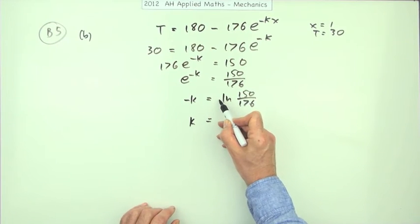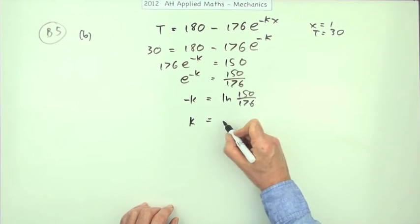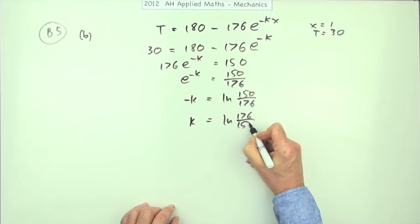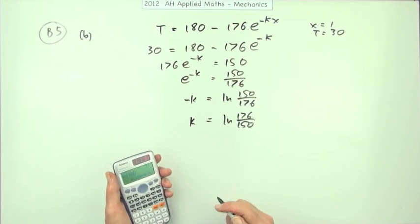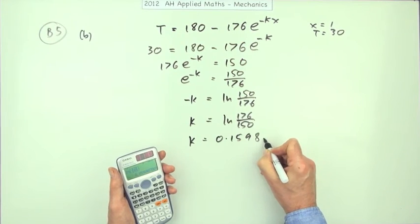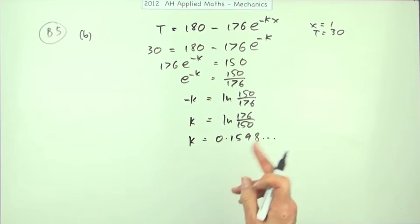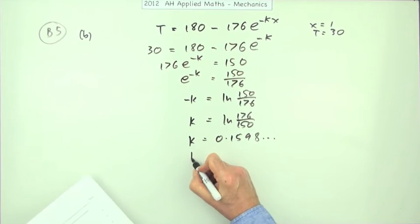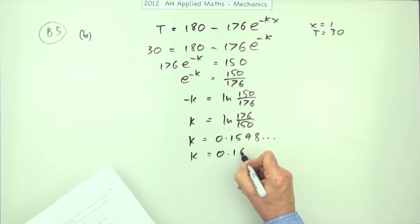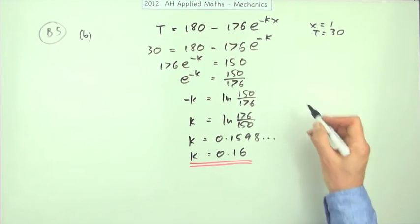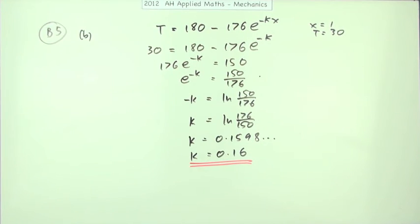Note that the negative of that log is the same as ln(176/150). Putting that into the calculator gives k equals 0.1598, and since the question asked for two decimal places, k equals 0.16. The marking was one mark for getting to the exponential equation and one for the final answer.